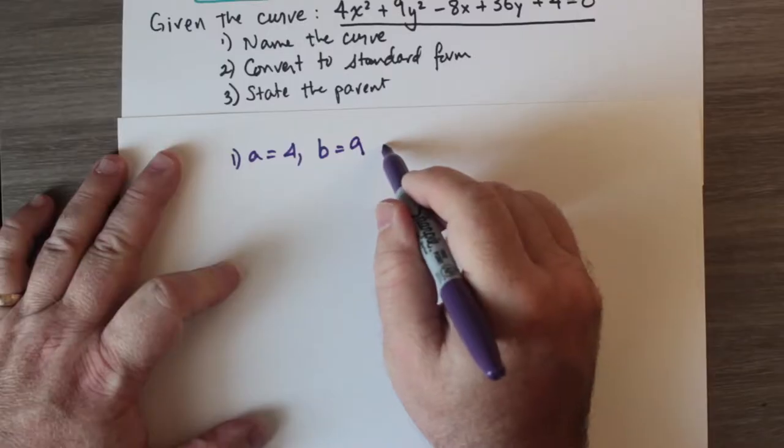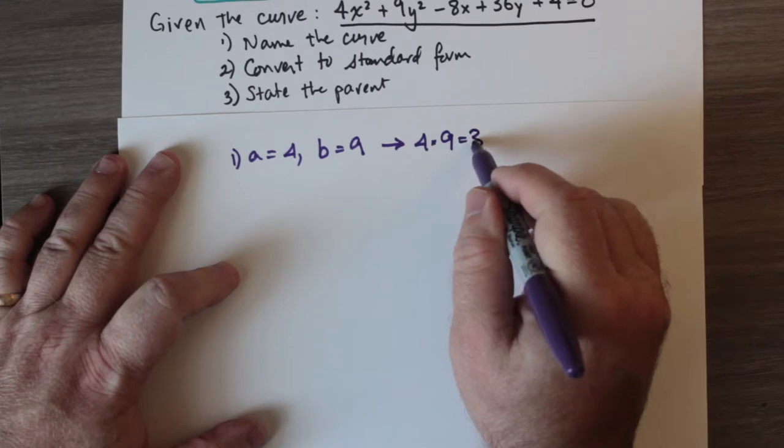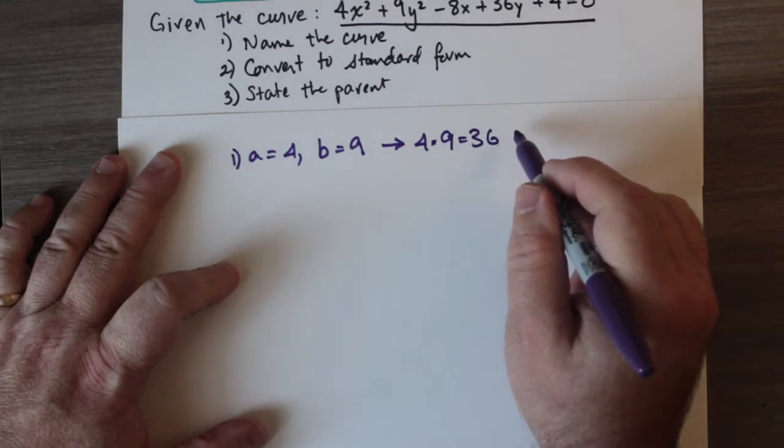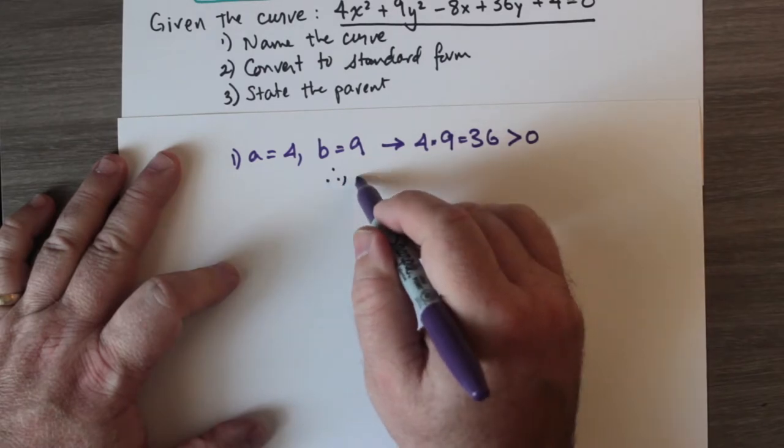We see that a = 4 and b = 9. a and b are not equal to each other so that rules out circle. We also have 4 × 9 = 36, 36 is greater than zero, so we conclude it's an ellipse.